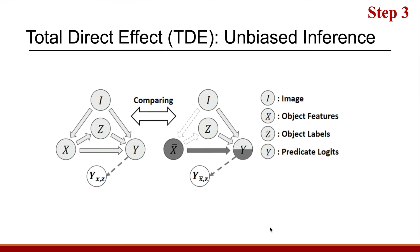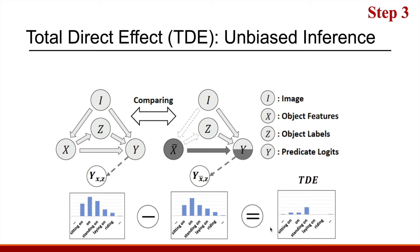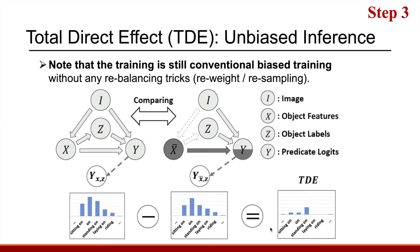Here comes the solution. Our final step applies the Total Direct Effect (TDE), which removes the bad bias and recovers the unbiased part of the logits, corresponding to the visual part under the same context. Note that our training phase is still conventional biased training, so we only need to run the inference model twice.